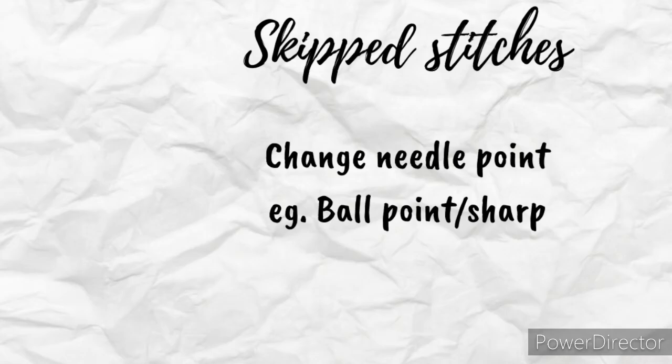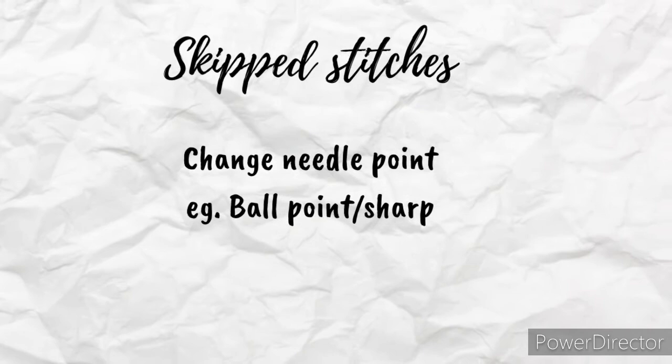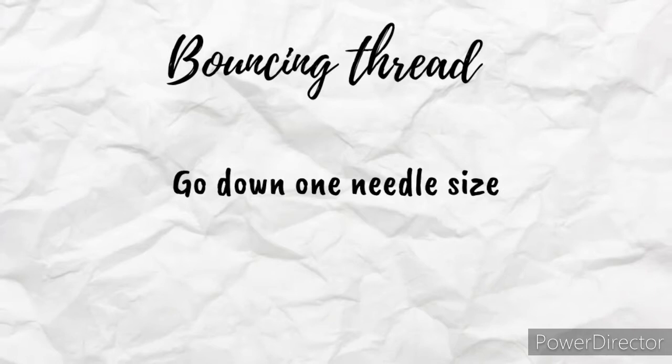Troubleshooting the sewing machine needles. For skip stitches, change the needle point. For breaking and shredding, use a topstitching needle or go up one needle size. For bouncing thread, go down one needle size.